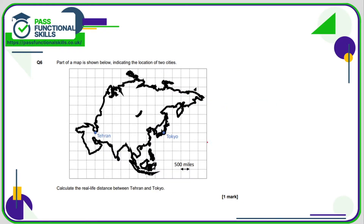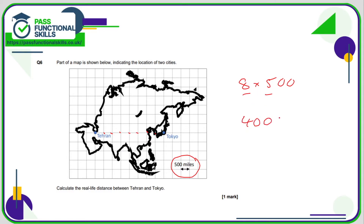Question six — no calculator allowed. The scale is 500 miles per square, which is a nice number. Tehran to Tokyo spans 8 squares. Eight times 500: eight times five is 40, so eight times 500 is 4000 miles.